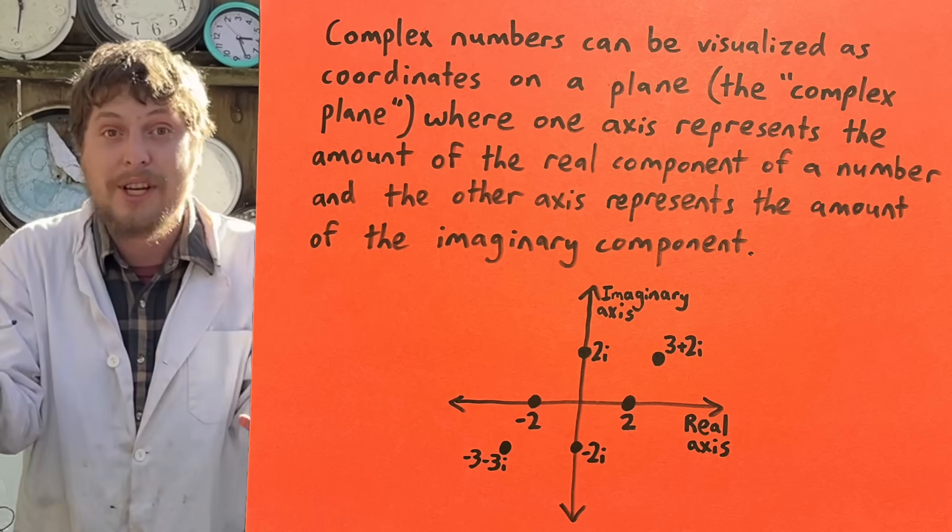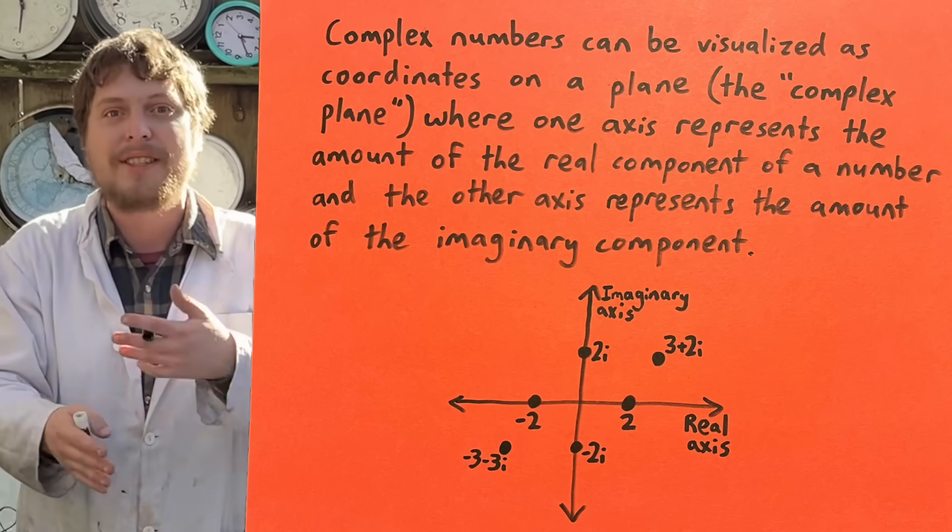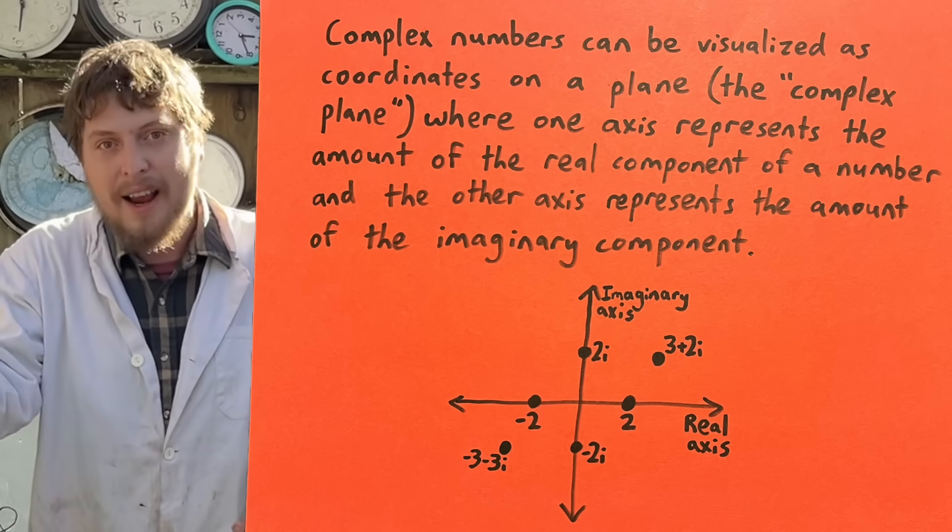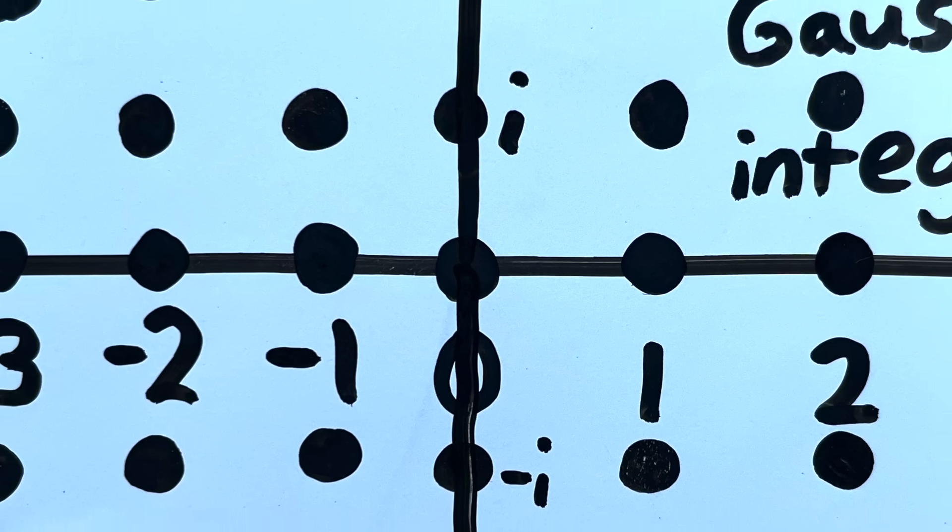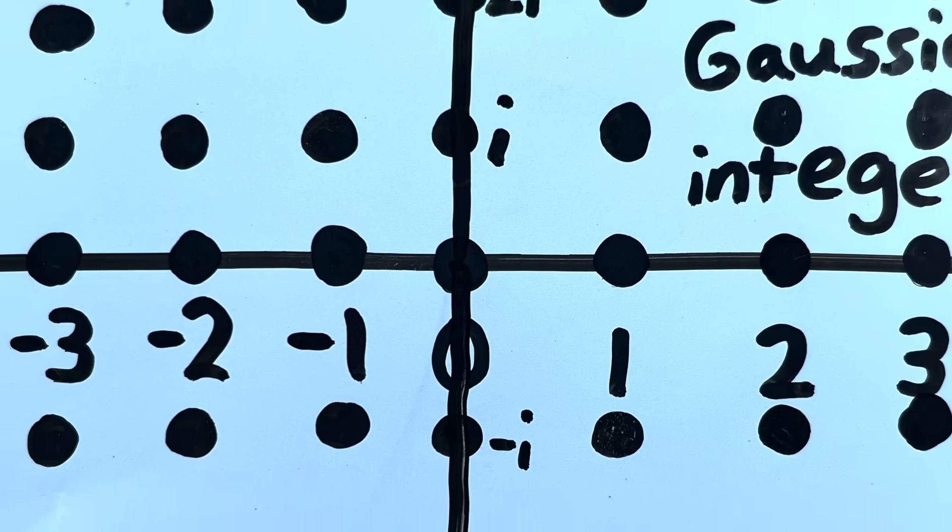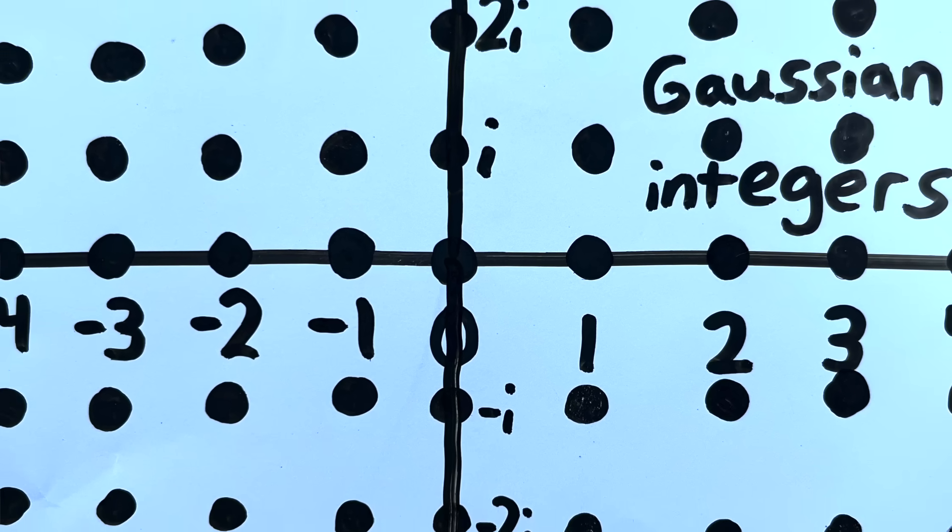some amount of real positive or negative or zero, and some amount of imaginary, which is the amount of i. Now on the complex plane, if we imagine where grid points would be, the spots where both the real and imaginary amounts in a number are integers,